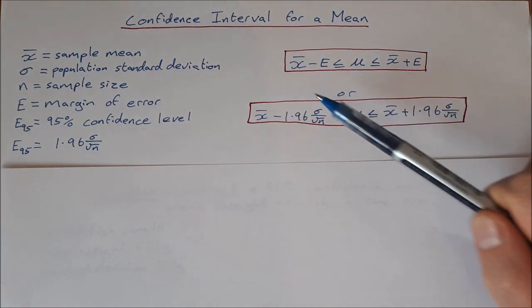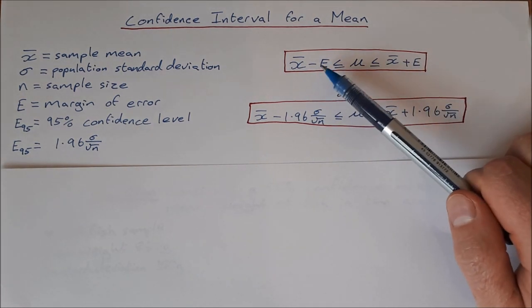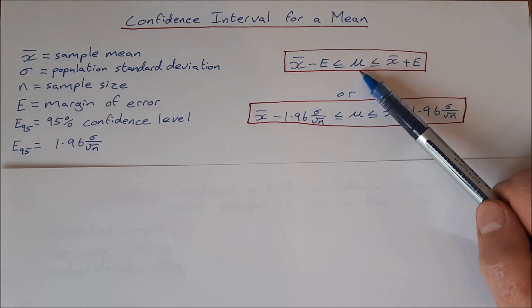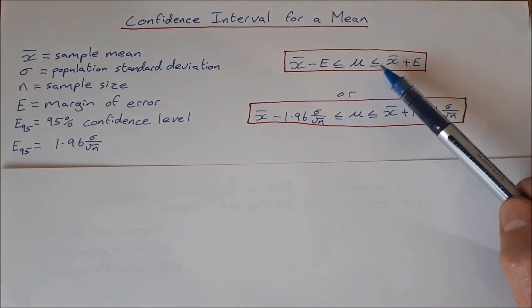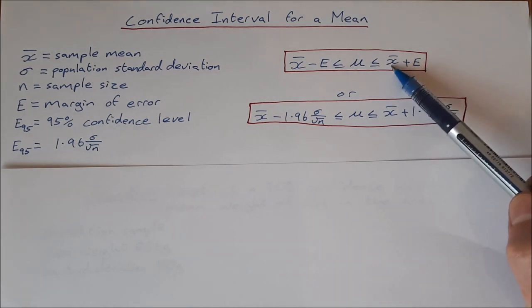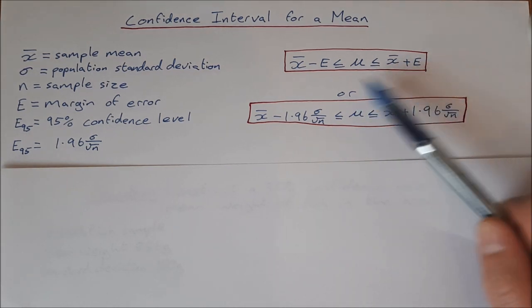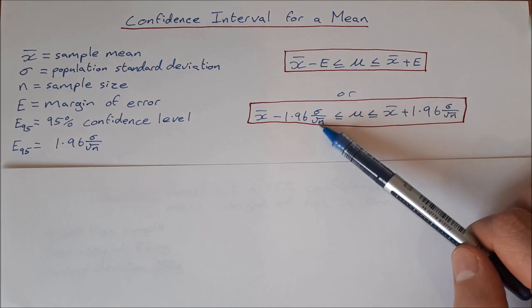So the formula that we use for our confidence interval is x̄ minus E, which is less than or equal to μ (that's the population mean), and less than or equal to x̄ plus E. So E being 1.96 times σ over root n...